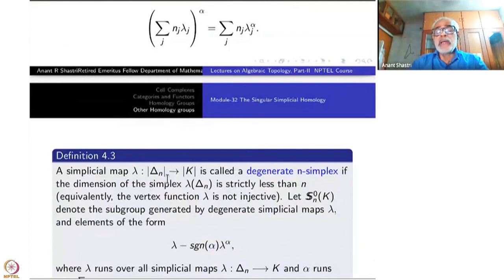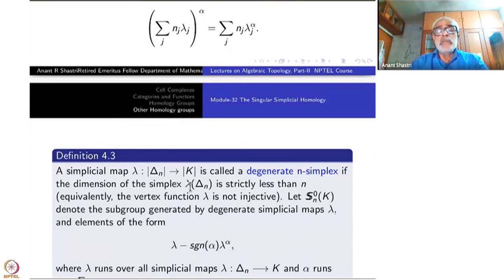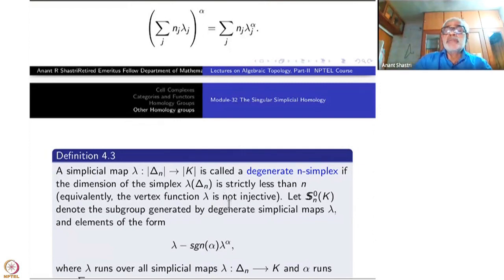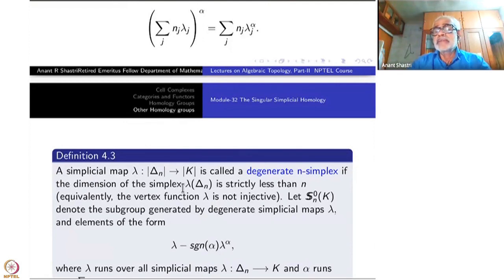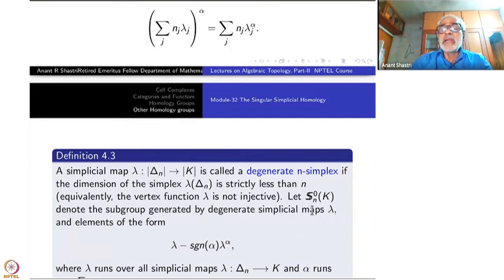A simplicial map λ: Δ^n → K is called a degenerate n-simplex if the dimension of λ(Δ^n) is strictly less than n, which is the same as saying the vertex function λ from vertices of Δ^n to vertices of K is not injective. If it is injective and a simplicial map, Δ^n would be embedded as an n-simplex, so the dimension would be the same. Anything which is not degenerate is called non-degenerate, meaning λ is injective.